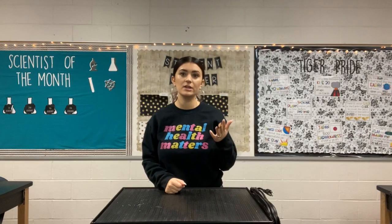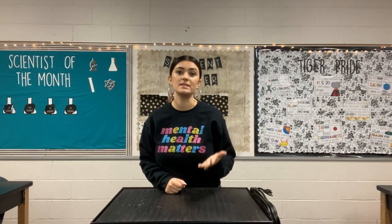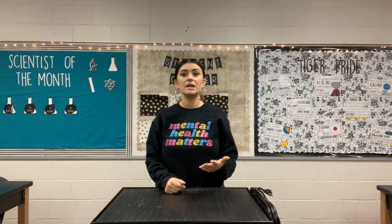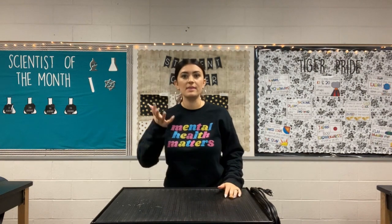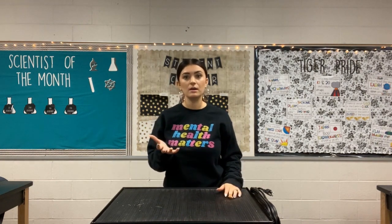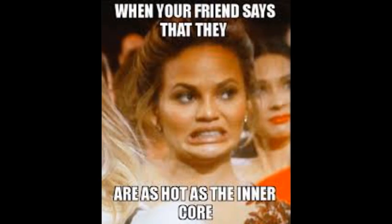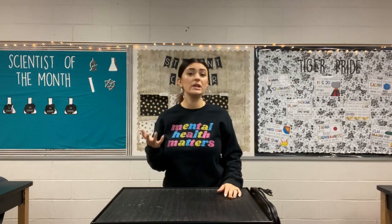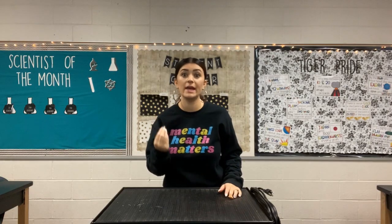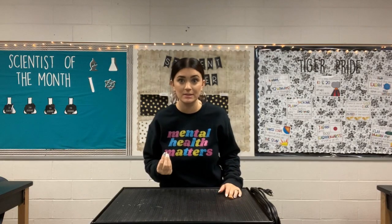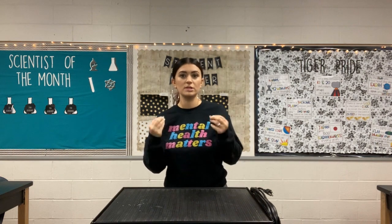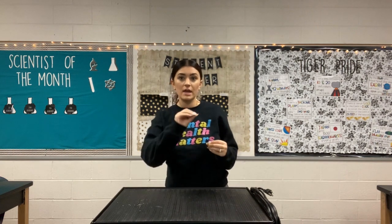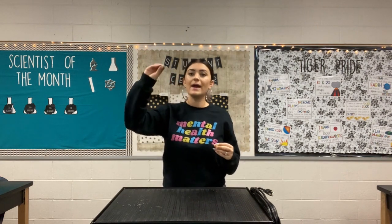Convection currents in the asthenosphere happen because the core heats up the melted rock. We know warm things rise. So when the core heats up this molten rock, it rises.